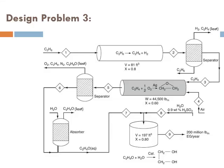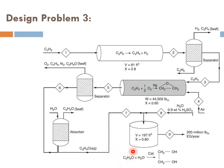In the previous lectures, we have learned how to design a plug flow reactor and a packed bed reactor. We needed the plug flow reactor to crack the ethane to ethylene, and then we needed the packed bed reactor because we needed to partially oxidize the ethylene to ethylene oxide using a catalyst. Now that we have the ethylene oxide, we need to react it with water in a CSTR.